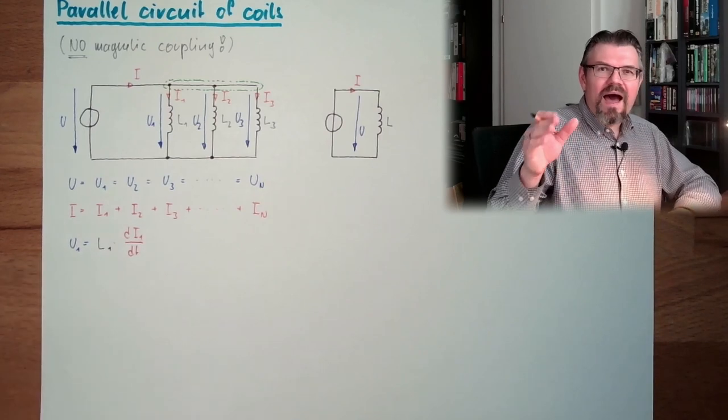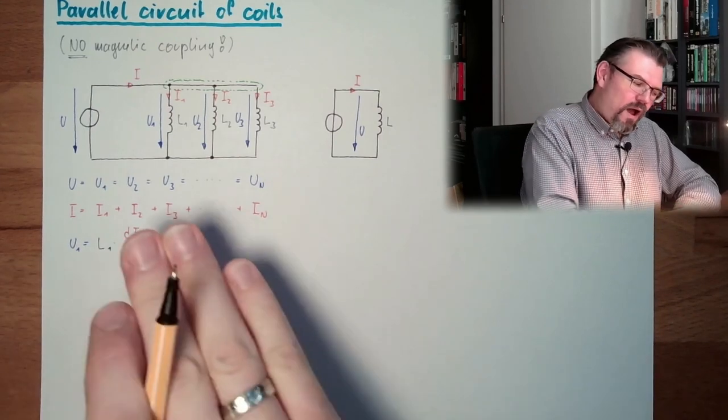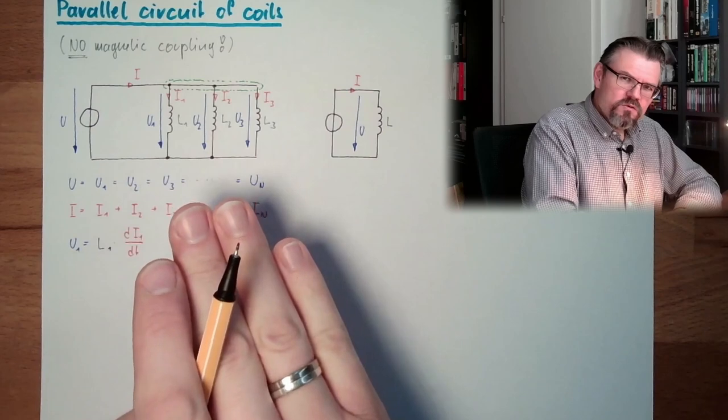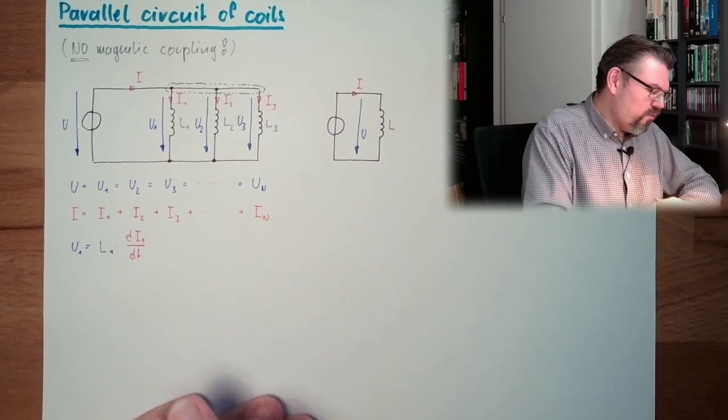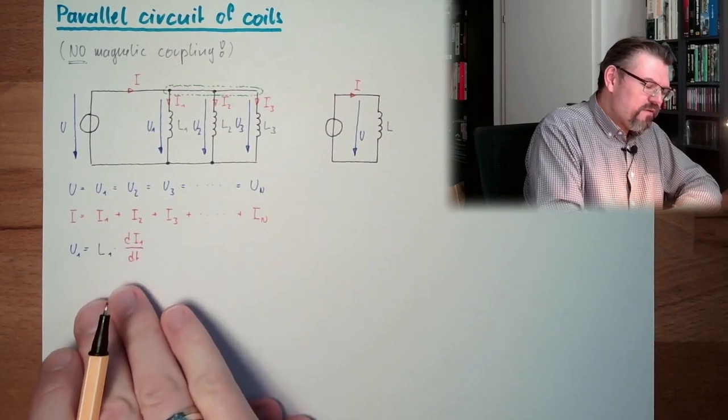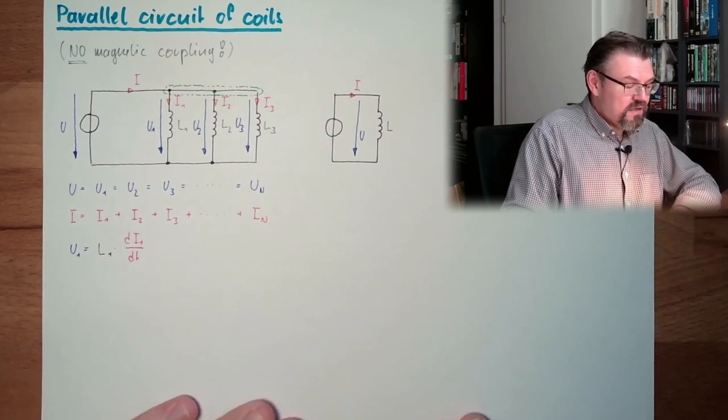Then we had also terms I times R. I say these are ideal coils, so they don't have any resistance. So the only thing which is left is the magnetic part.